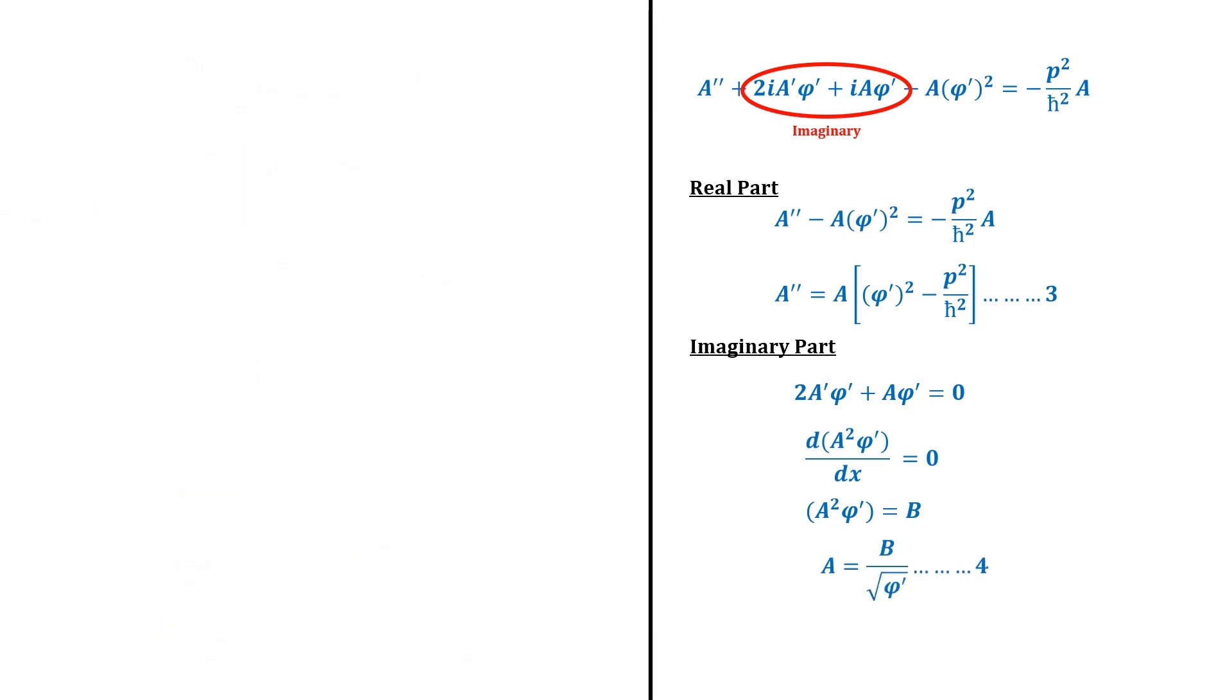But equation 3 real part cannot be solved so easily. For this, we have to use approximate method. Assuming that due to variation in potential, amplitude A is varying very slowly, then the variation in A'' will be also very low. Or to say precisely, the ratio of A'' and A will be very low compared to (φ')² or p²/h̄².